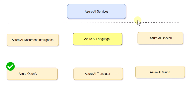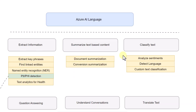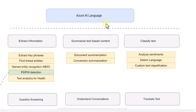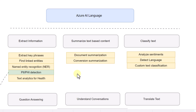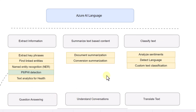Azure AI comes up with a lot of services, and in this video we are going to focus on Azure AI Language. We can use Azure AI Language for different kinds of tasks: we can use it to extract information, summarize text, classify text, use it for question answering, understand conversations, and also to translate text.